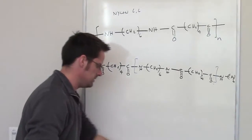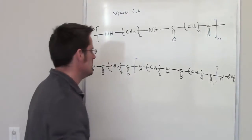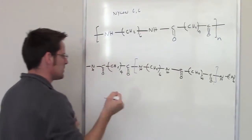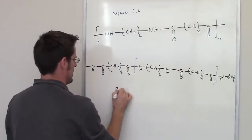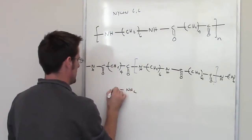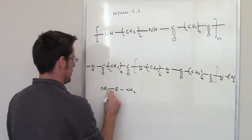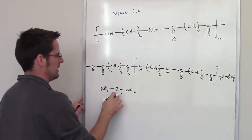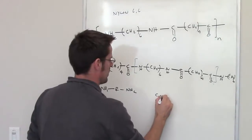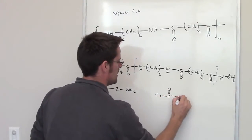As I delineated in an earlier video, the monomers used to construct nylons are a diamine—you have two NH2s with an R in between—and you react that with a diacid chloride.